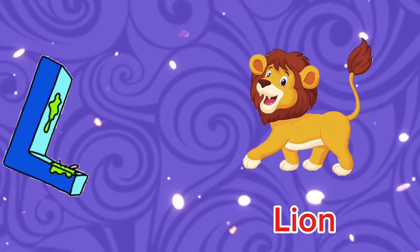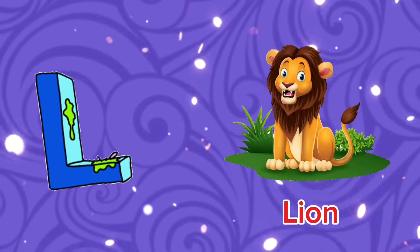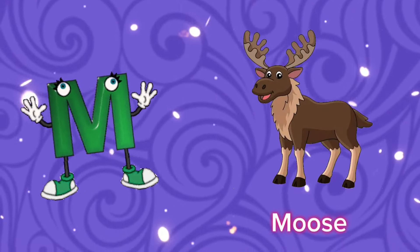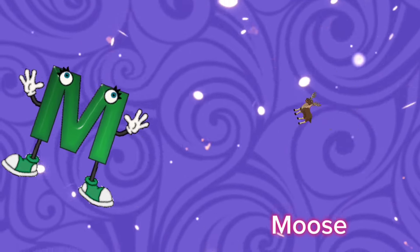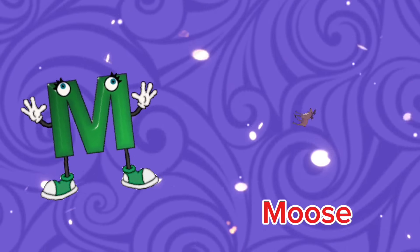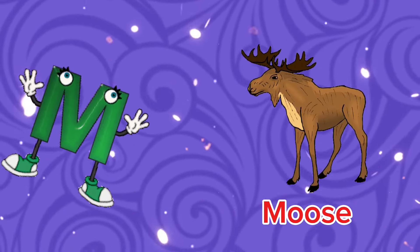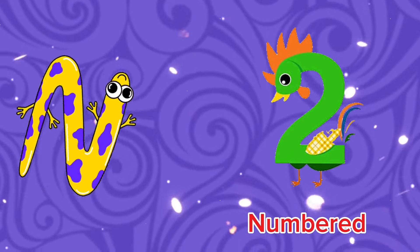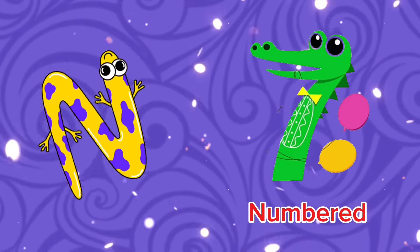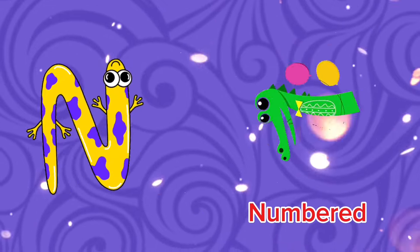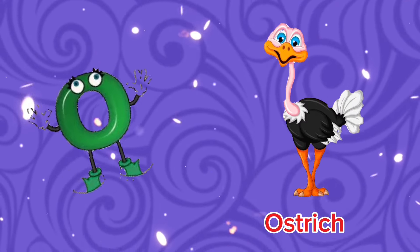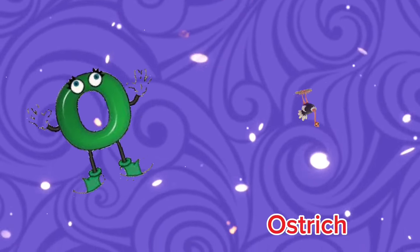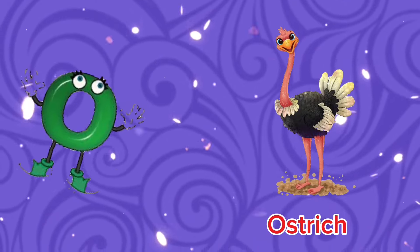L is for Lion, l, lion. L is for Lion, l. M is for Moose, m, moose. M is for Moose, m. N is for Numbered, n, numbered. N is for Numbered, n. O is for Ostrich, o, ostrich. O is for Ostrich, o.